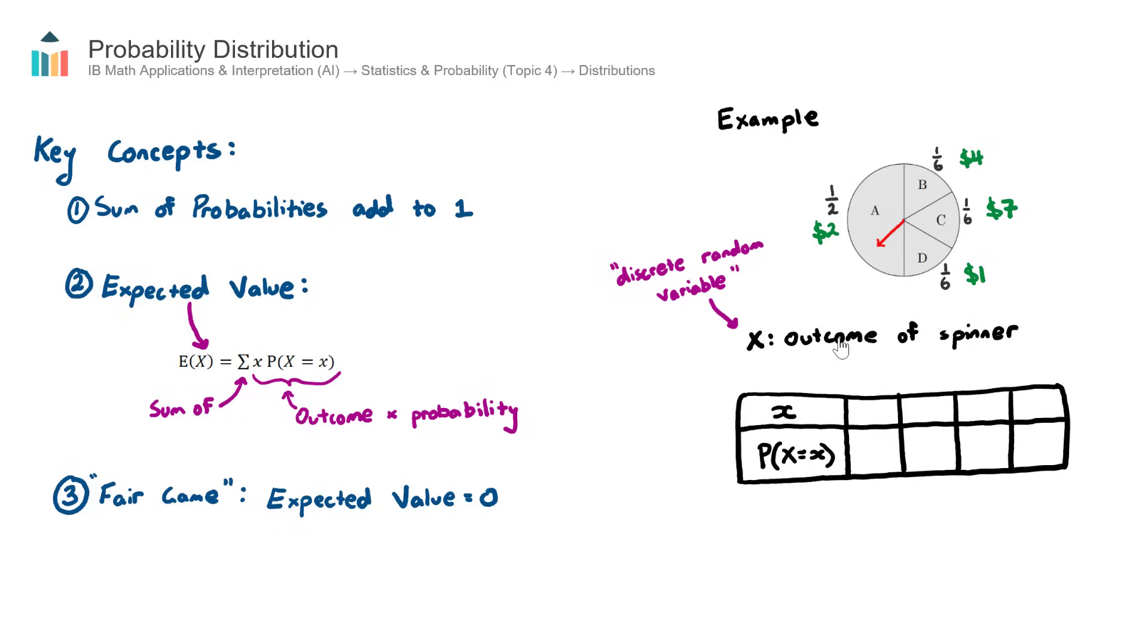In this case here, we have a discrete random variable, which simply is the outcome of the spinner. What are the potential prizes when we do this spinner? Well, there are four outcomes. The outcomes are: we could win $2, we could win $4, we could win $7, or we could win $1. So this is basically A, B, C, and D.